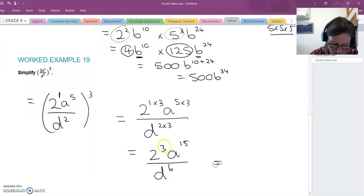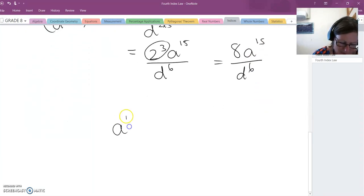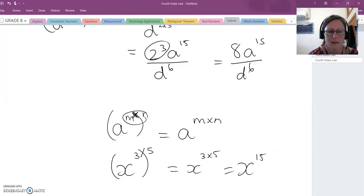We can leave it like that or 2 to the power of 3 is 8. 8a to the 15, d to the 6. So index law 4. Power to a power. We times these indices together, so it's a to the m times n. Or if x to the cubed, raised to the power of 5, we say x to the 3 times 5, which is x to the power of 15. That is index law 4.